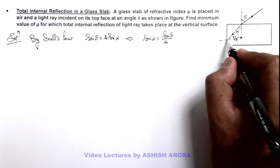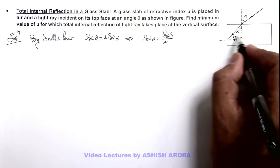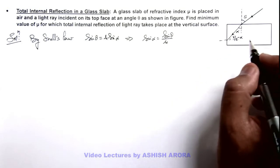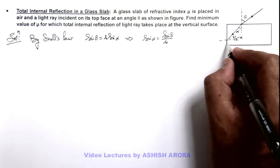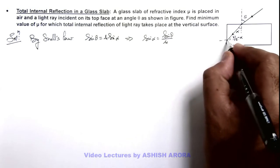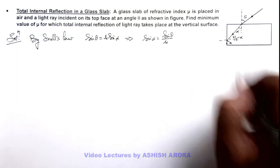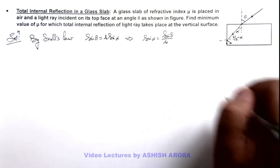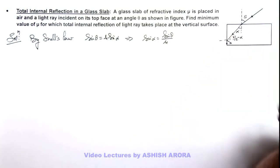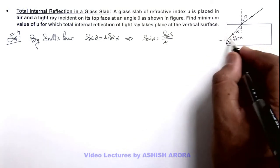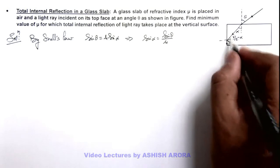For TIR to take place at this surface, this pi by 2 minus alpha should result the light to graze along the surface so that only a reflected ray will graze along the surface, and refracted ray will graze along the surface. Or we can write pi by 2 minus alpha should be the critical angle for this surface.